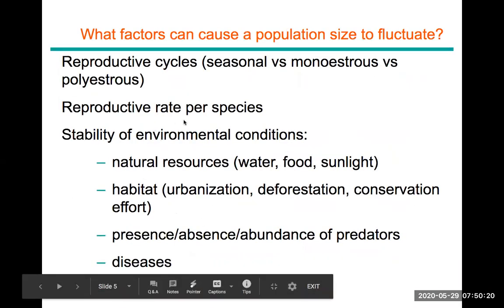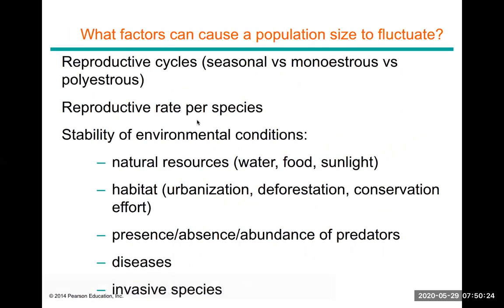The reproductive rate per species refers to how many young an organism can produce. Some insects can produce as many as 200 offspring in a cluster, while others produce only one young at a time because they provide parental care. Some species don't provide parental care at all. This significantly affects the numbers and size of a population.